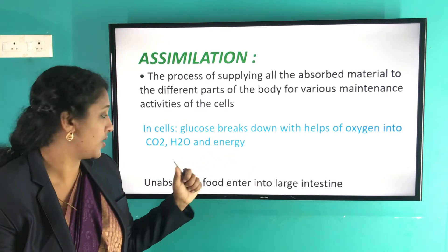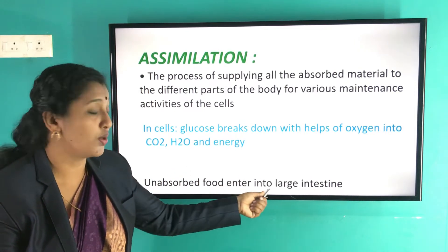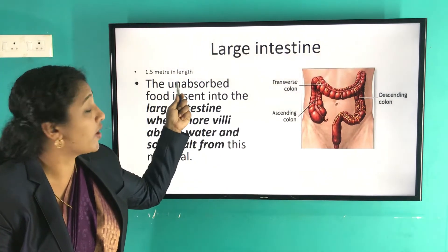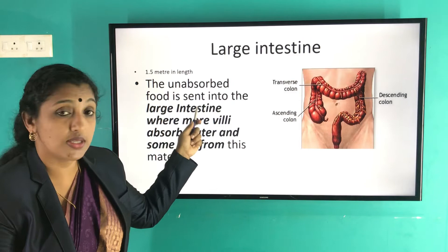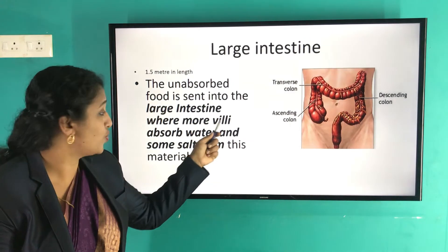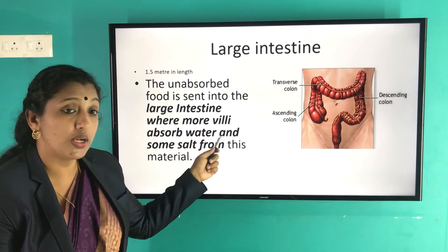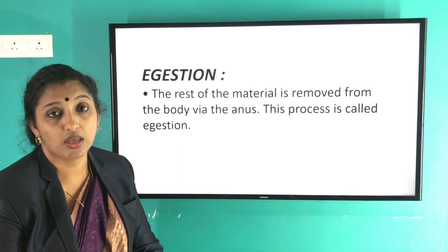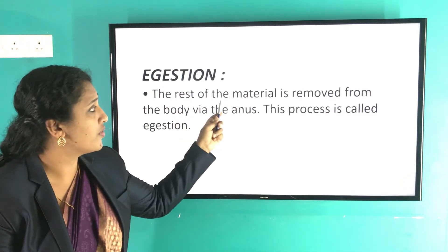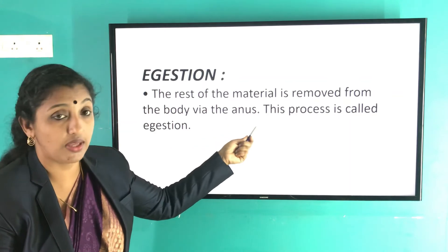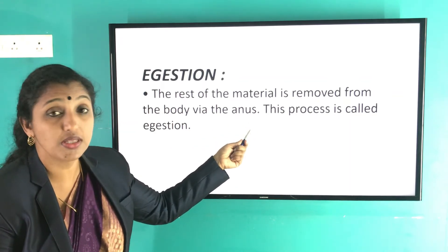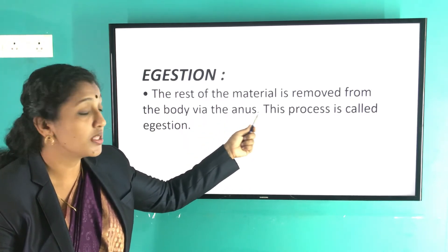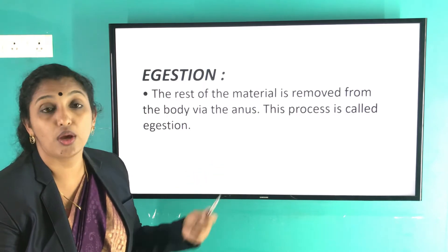Unabsorbed food then enters the large intestine, which is 1.5 meters in length. Here, more water and salts are absorbed from this material. The last step in the digestive system is egestion — the rest of the undigested material is removed from the body via the anus. This process of removing undigested food from the alimentary canal through the anus is called egestion.